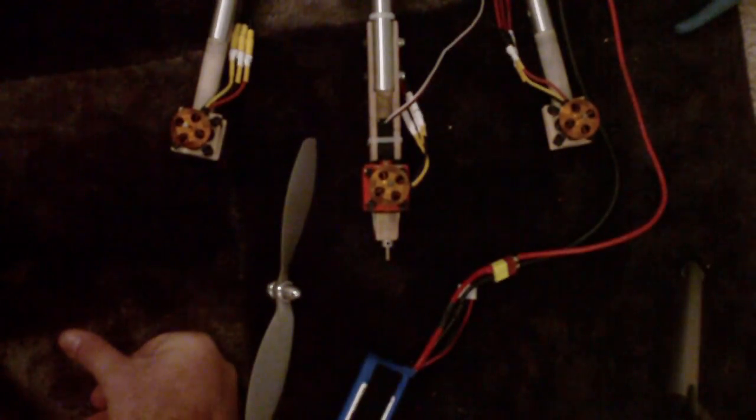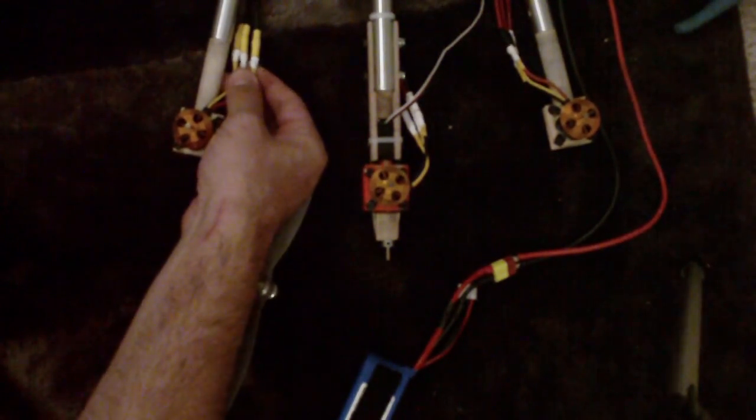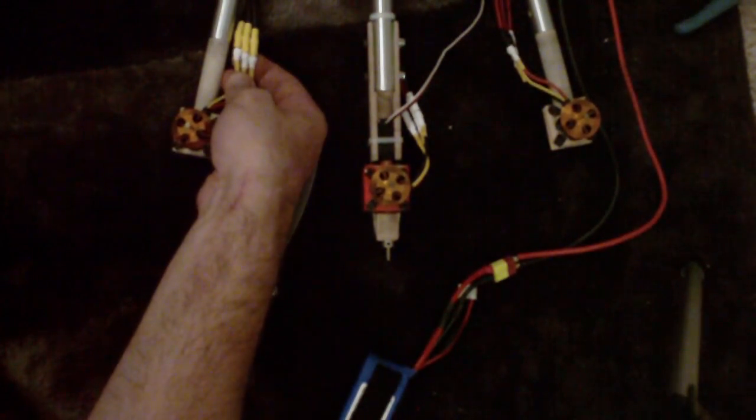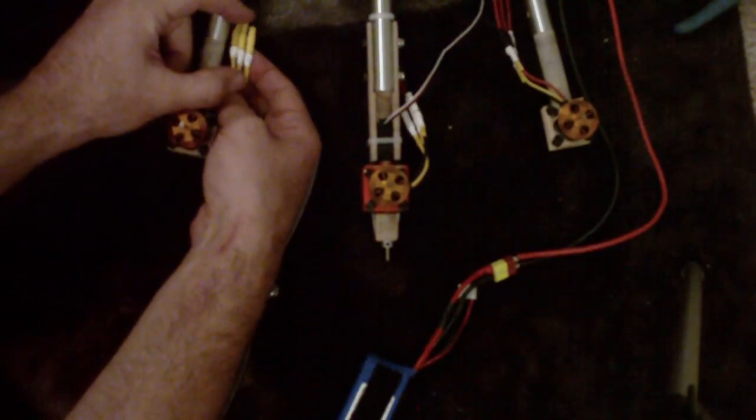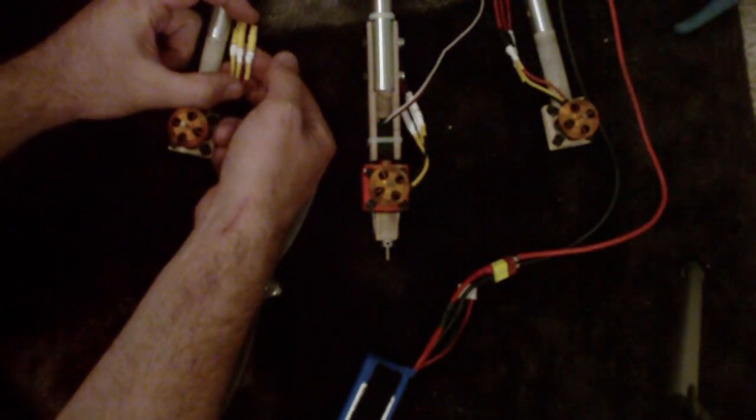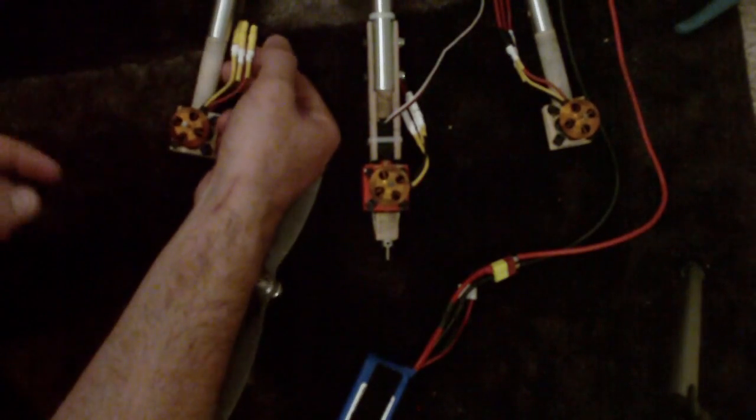Once all three motors are rotating in the proper direction, you can tidy up the connections. What I'm going to do is I'm going to put heat shrink over the entire bullet connector and wiring.